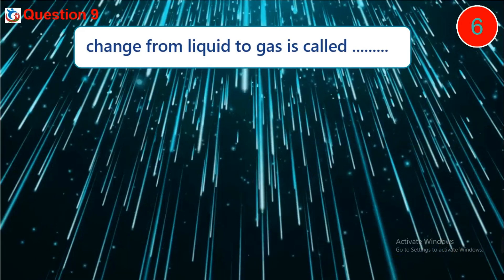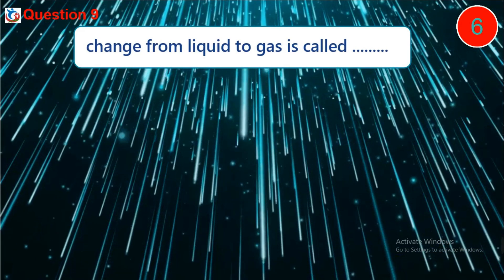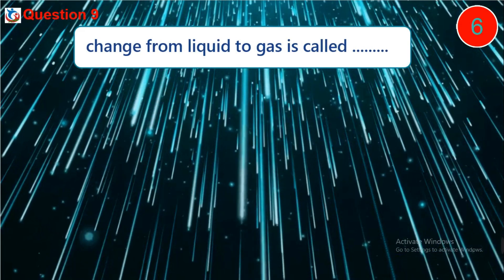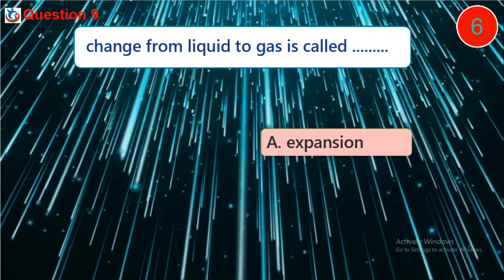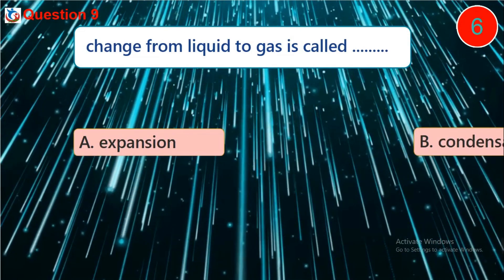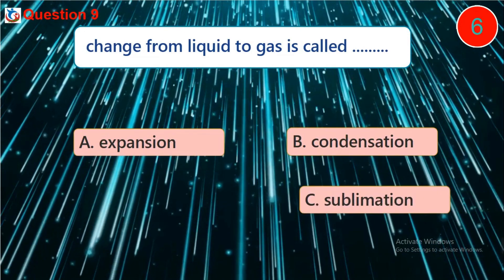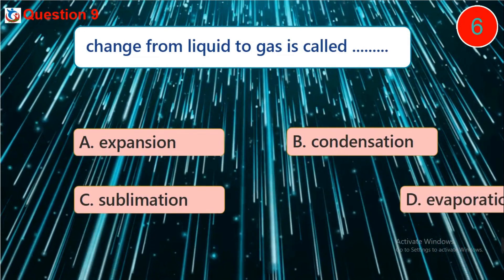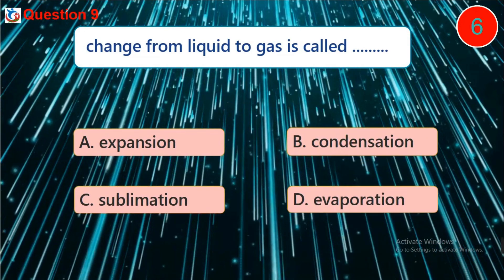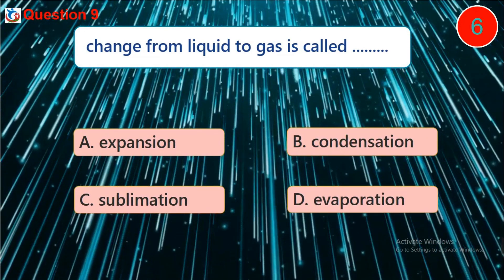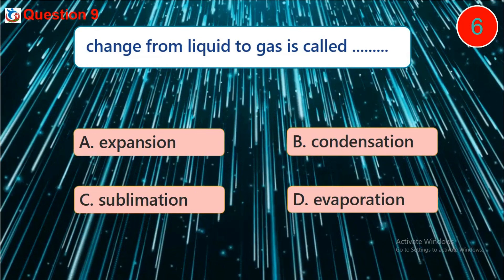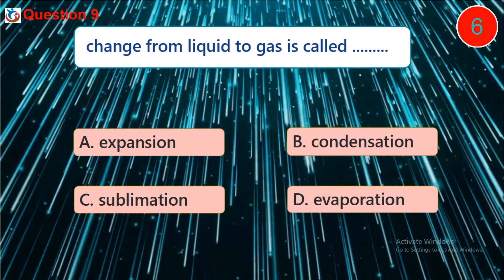Question 9. Change from liquid to gas is called dash. A. Expansion. B. Condensation. C. Sublimation. D. Evaporation.